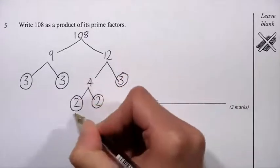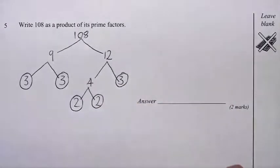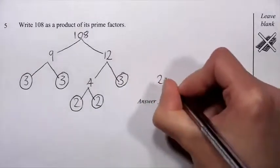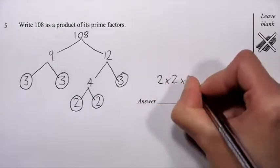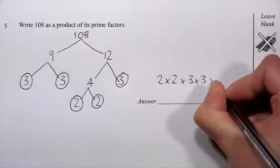Now, all the numbers at the bottom of the tree have rings round them, so I can stop now, and I'll write it out in order. So that's 2 times 2 times 3 times 3 times 3.